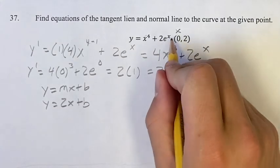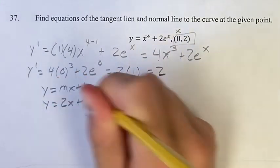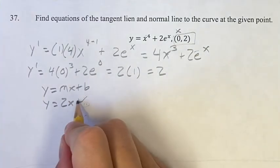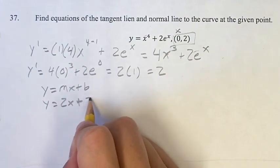But if you look, the given point is (0, 2). Since we know that's on our curve, and we know that this point is on the y-axis, this is actually our y-intercept. So b is just going to be 2.